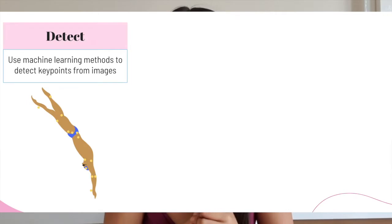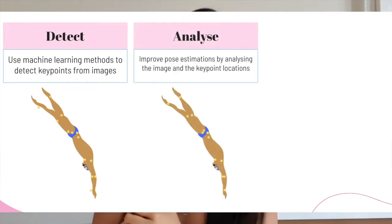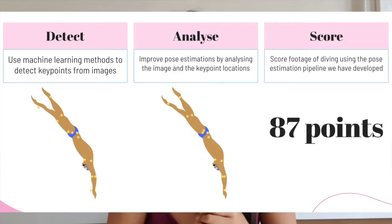Since our goal was to be able to predict accurate and precise body key points given videos of fast moving contorted poses, we actually managed to break this project down into three steps: detecting the body key poses, analyzing the poses to improve the precision, and finally using the pose estimation models to be able to score videos of diving.